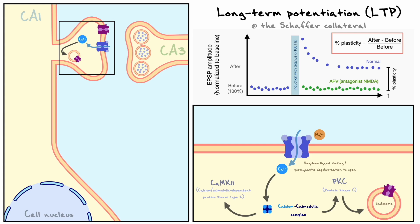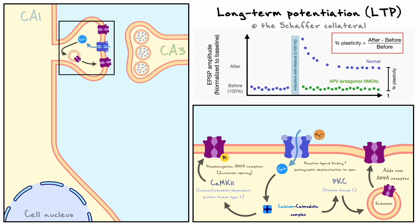First, some of their downstream phosphorylation targets are important proteins involved in the transport of AMPA receptors in and out of the membrane. The phosphorylation of these proteins causes AMPA receptors to be moved from internal structures where they are stored to the membrane of the postsynaptic terminal. With more ionotropic AMPA receptors, the postsynaptic response is considerably increased as more inward current can enter the cell. There is an important distinction between the induction and the expression of plasticity: induction corresponds to the biochemical cascade activated by the tetanus, and expression corresponds to the actual long-term changes — in this instance, the addition of AMPA receptors.